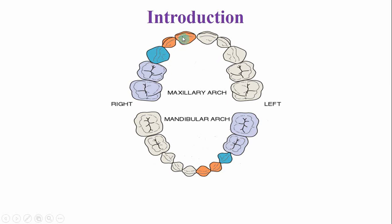First, this is the deciduous central incisor, this is the deciduous lateral incisor, and this is the deciduous canine. Same over here, this is the maxillary deciduous canine on the left side.